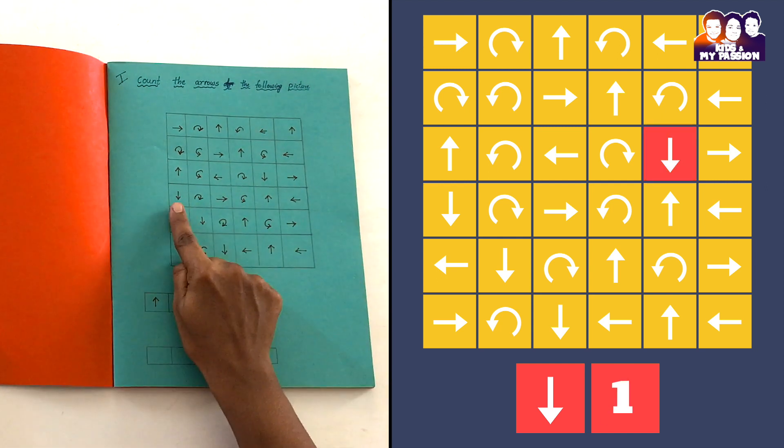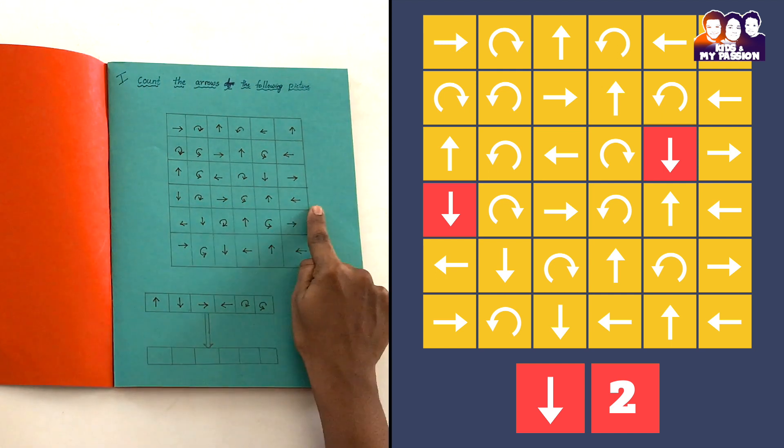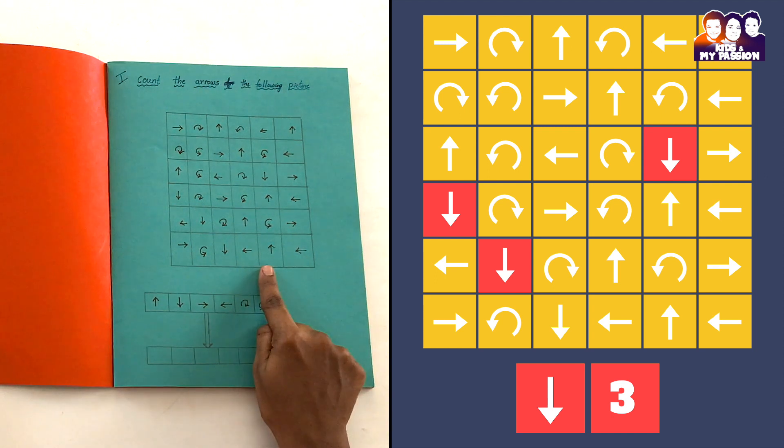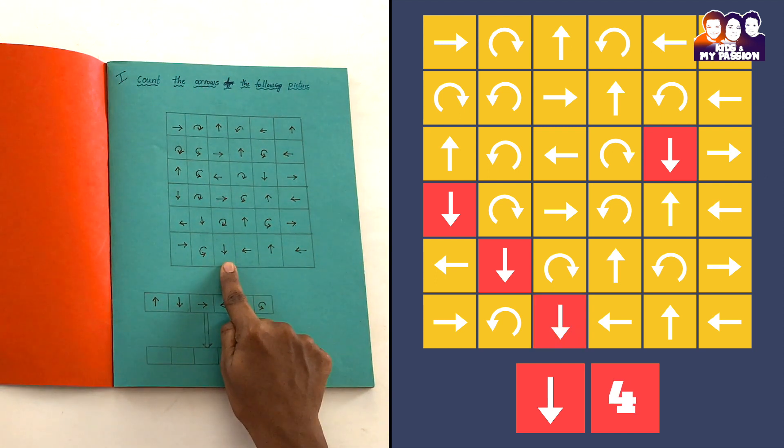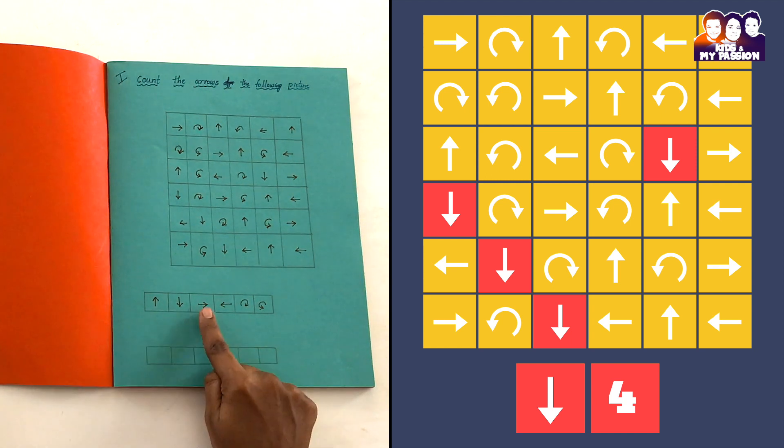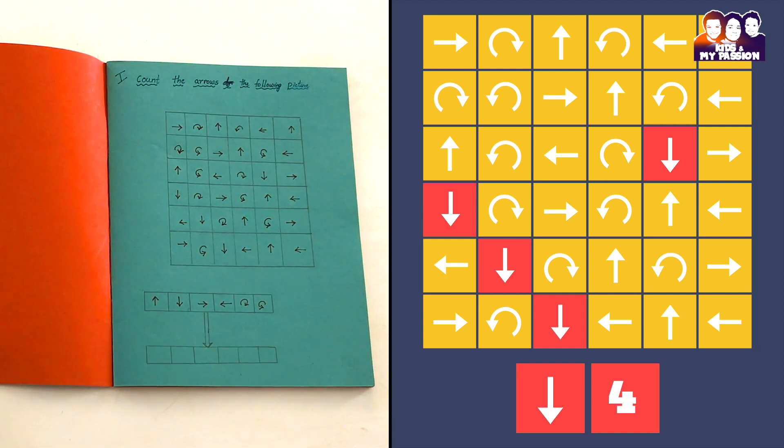Similarly, we'll see another example for the down arrow: one, two, three, four. Enter the value four. Like that, they need to count for left arrow, right arrow, clockwise, and anti-clockwise direction.